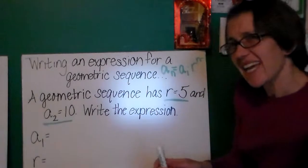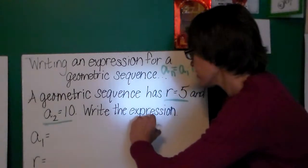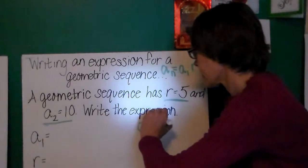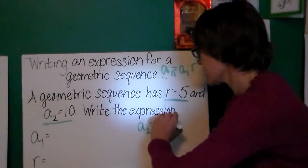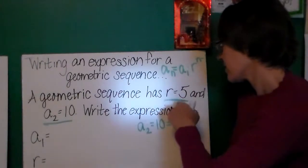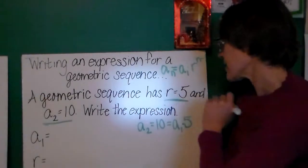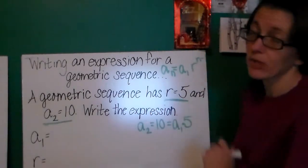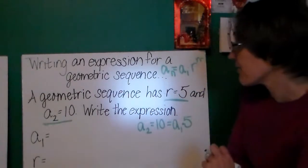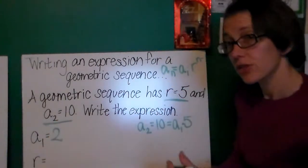So, I notice that a_2 is equal to 10. Well, if a_2 is equal to 10, then that means it has to be equal to the first term times the common ratio just multiplied once. So 10 is equal to a_1 times 5 and that means a_1 must be equal to 2.